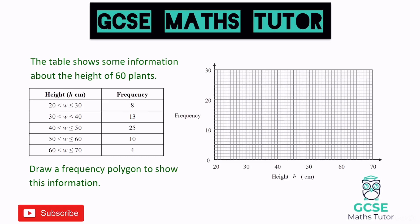So this question says the table shows the information about the height of 60 plants and then it gives us all these classes or groups on the left, I'm going to refer to them as classes, being this 20 to 30, and it gives us the frequency within each of those categories and it says draw a frequency polygon to show this information. Now it's really nice and simple for us to do, we've got all the frequencies given to us that we're going to plot along the y-axis there where it says frequency,